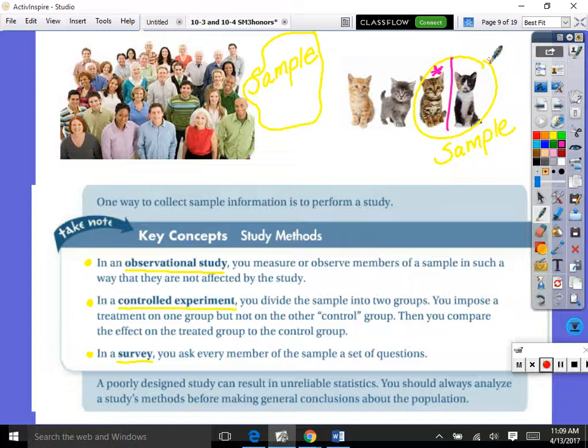Then there's a survey. So let's say that you pick this sample and you do a survey. So you ask every member of the sample a set of questions. So we picked these people and ask them all the same questions. Does that make sense? A poorly designed study can result in unreliable statistics. You should always analyze a study's methods before making general conclusions about the population.